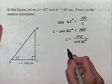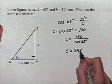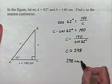Using our calculator, we can come up with an approximate value for C of 298. And so the answer to the problem would be 298 centimeters.